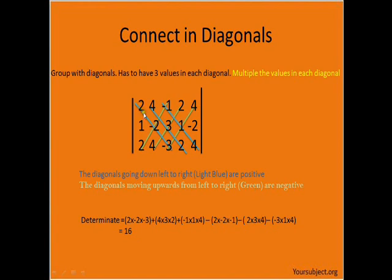Since we have each group, we would have 2 times negative 2 times negative 3, which is right here, plus 4 times 3 times 2, which is this group. We have to multiply the values in each diagonal together.